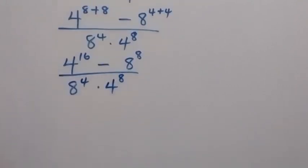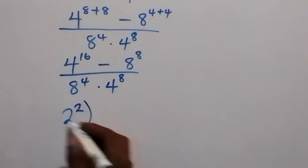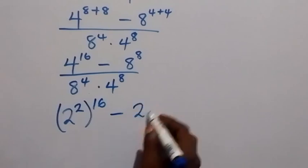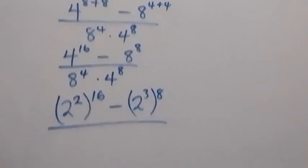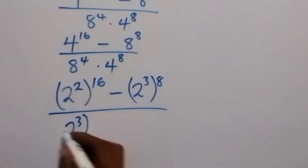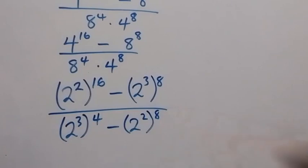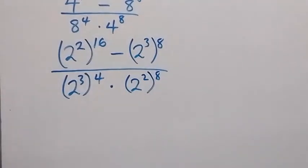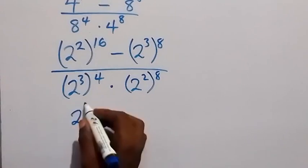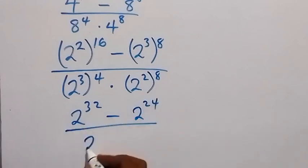From here, we change everything to base 2. We have 2 squared as 4, raised to power 16, then minus 2 raised to power 3 (which is 8) raised to power 8, divided by 2 raised to power 3 raised to power 4, times 2 squared raised to power 8. Expanding using the law of indices, this becomes 2 raised to power 32 minus 2 raised to power 24, divided by 2 raised to power 12 times 2 raised to power 16.